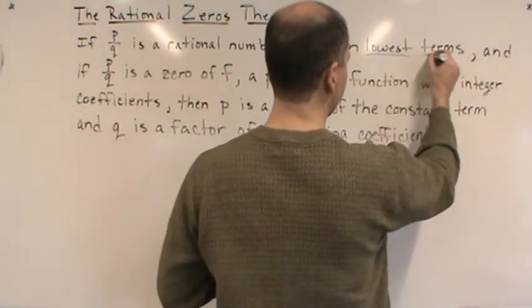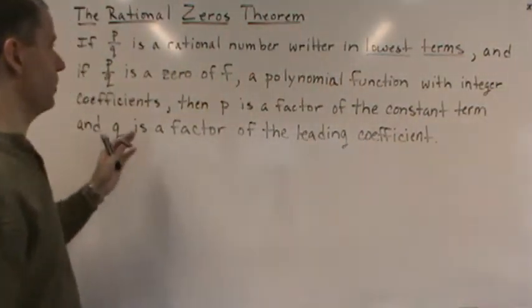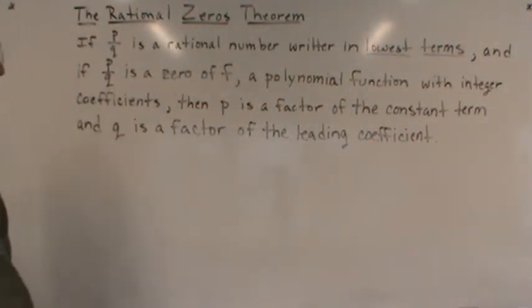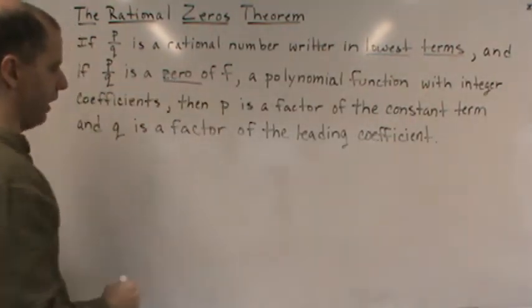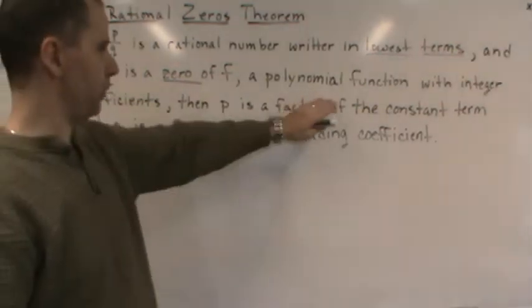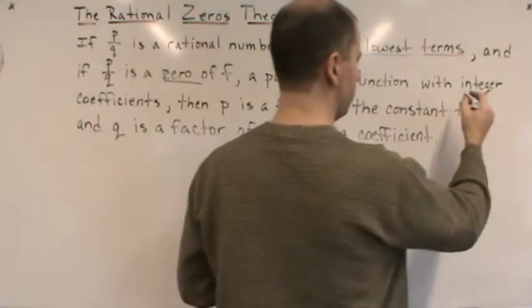We want to make sure P divided by Q is in lowest terms, and if P over Q is a zero of the function F, and F is a polynomial function with integer coefficients,